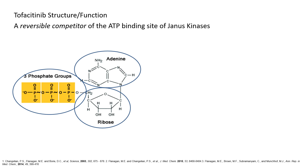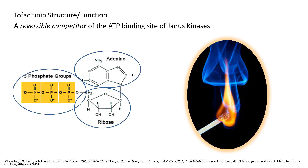What ATP does is donate one of the phosphate groups at the very end to produce energy. Phosphorus is a highly energy-containing element in the periodic table of elements.